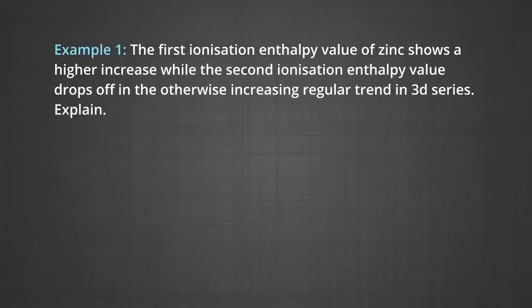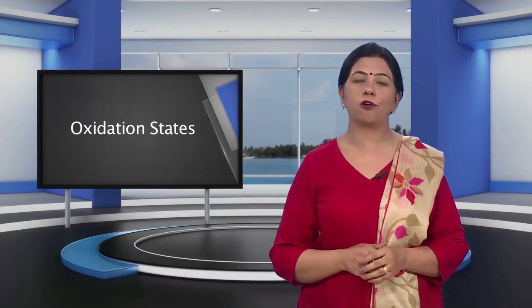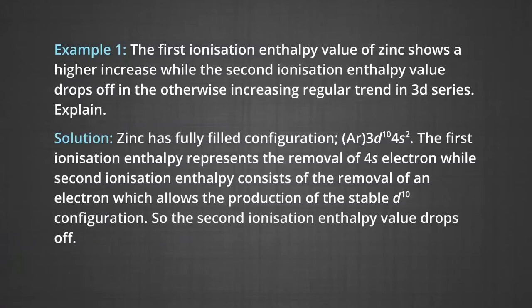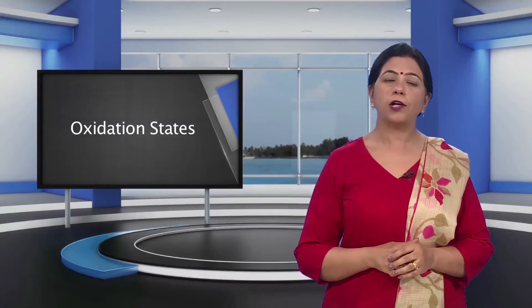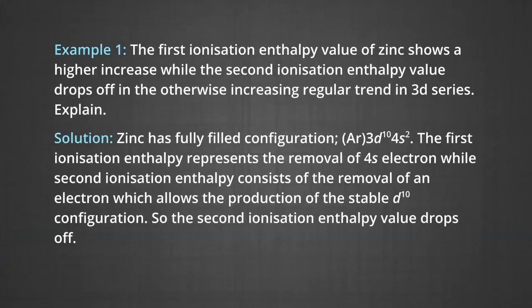Example 1: The first ionization enthalpy value of zinc shows a higher increase, while the second ionization enthalpy value drops off in the otherwise increasing regular trend in the 3D series. For zinc with configuration [Ar] 3D10 4S2, the first ionization enthalpy represents removal of the 4S electron, while the second ionization enthalpy involves removal of an electron allowing production of the stable D10 configuration. So the second ionization enthalpy value drops off.